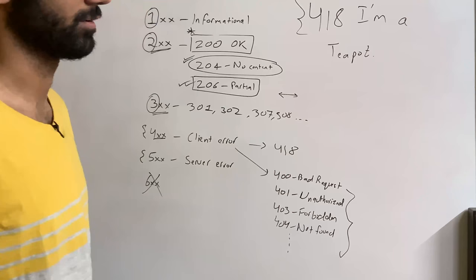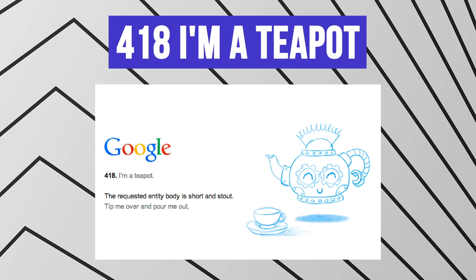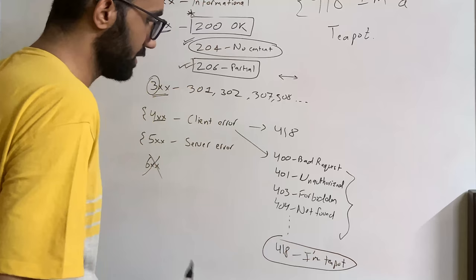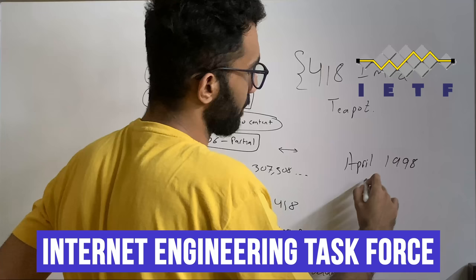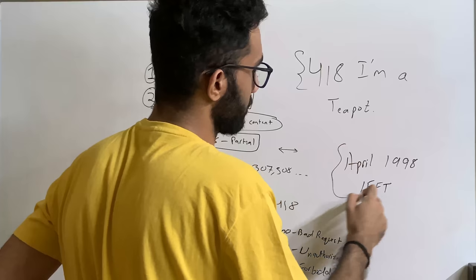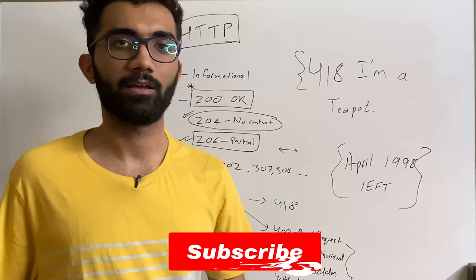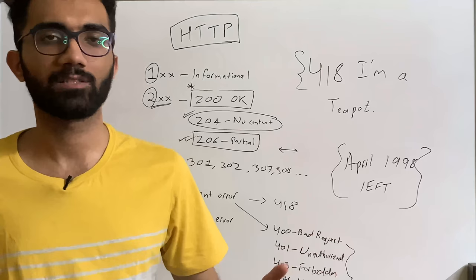418 says 'I'm a teapot.' This technically is not part of the HTTP specification — if you look at the spec, you won't find that HTTP has to implement a 418 status code. It was implemented as a joke. In April 1998, the IETF community proposed on April 1st as a joke that we should have 418 as a status code responding 'I am a teapot' for anything which is brewing coffee. It's a running joke that has been around for a long time.